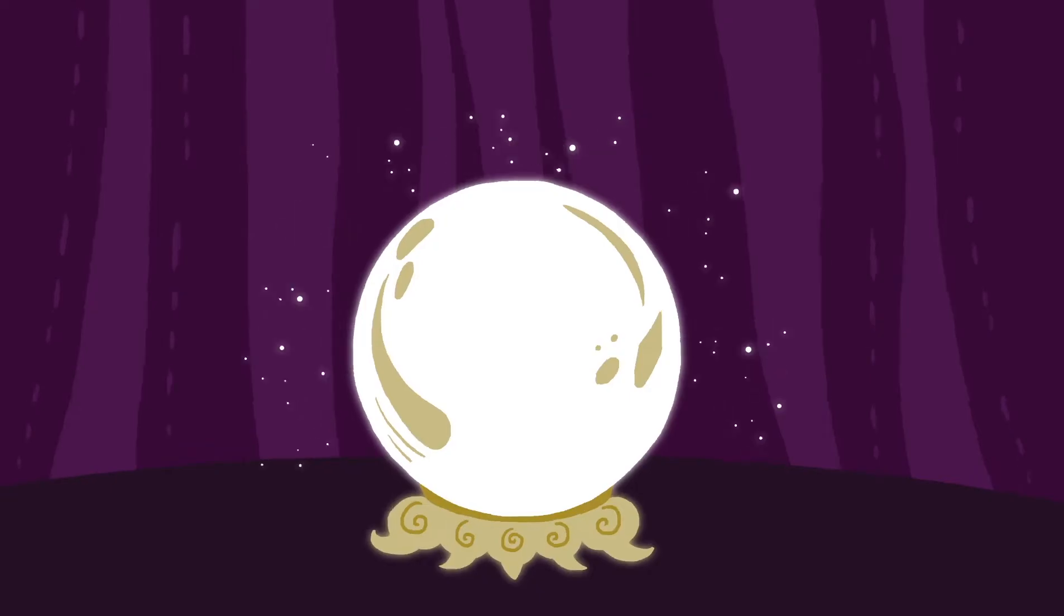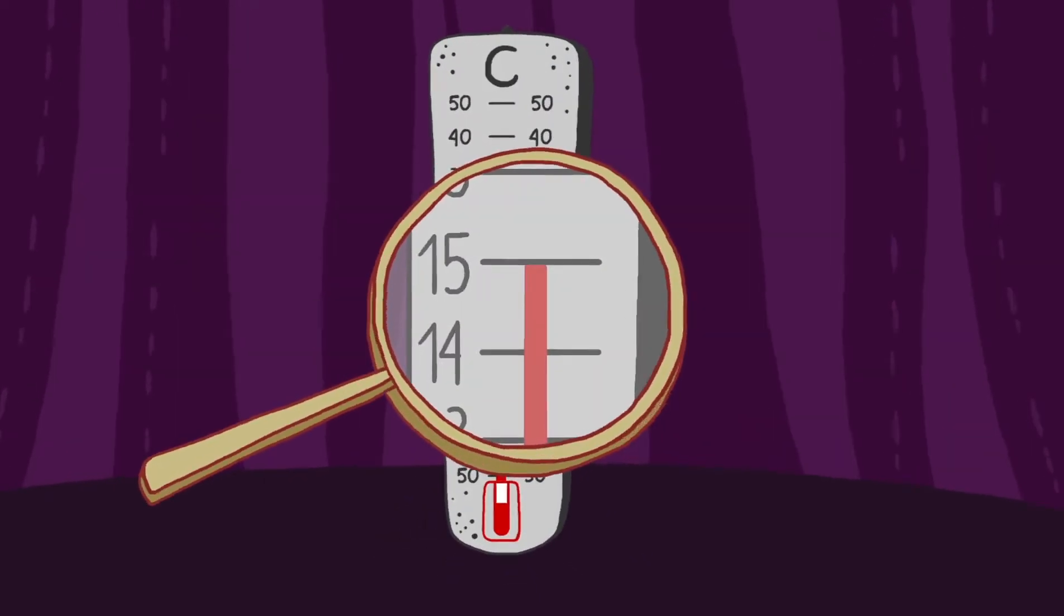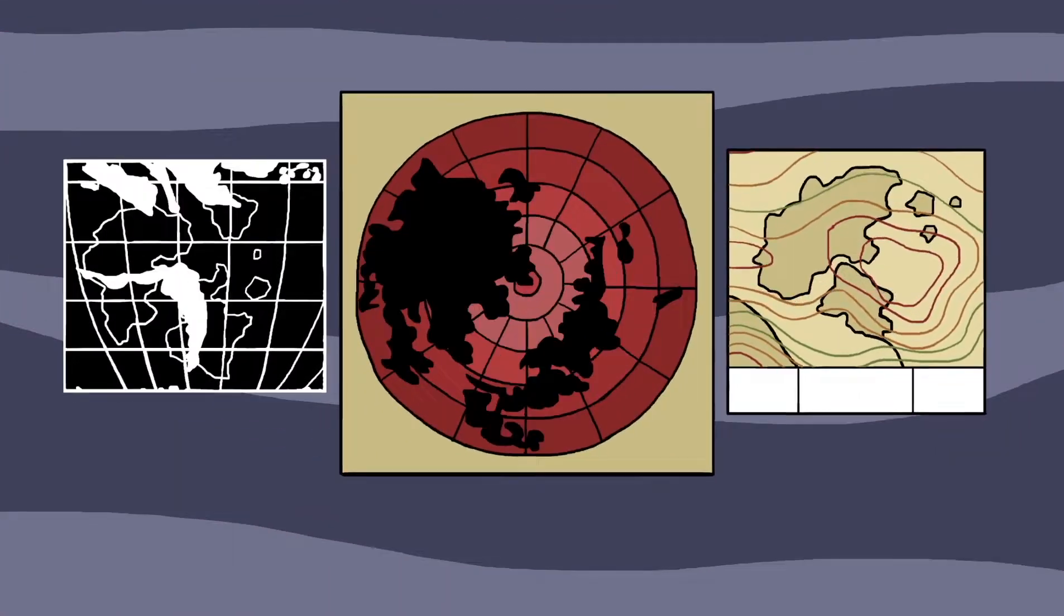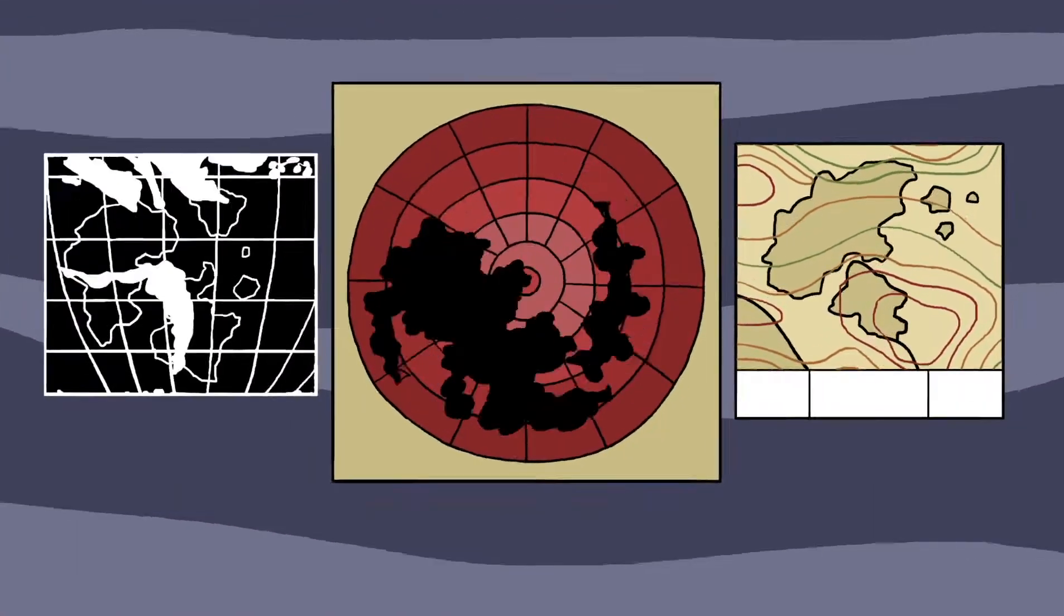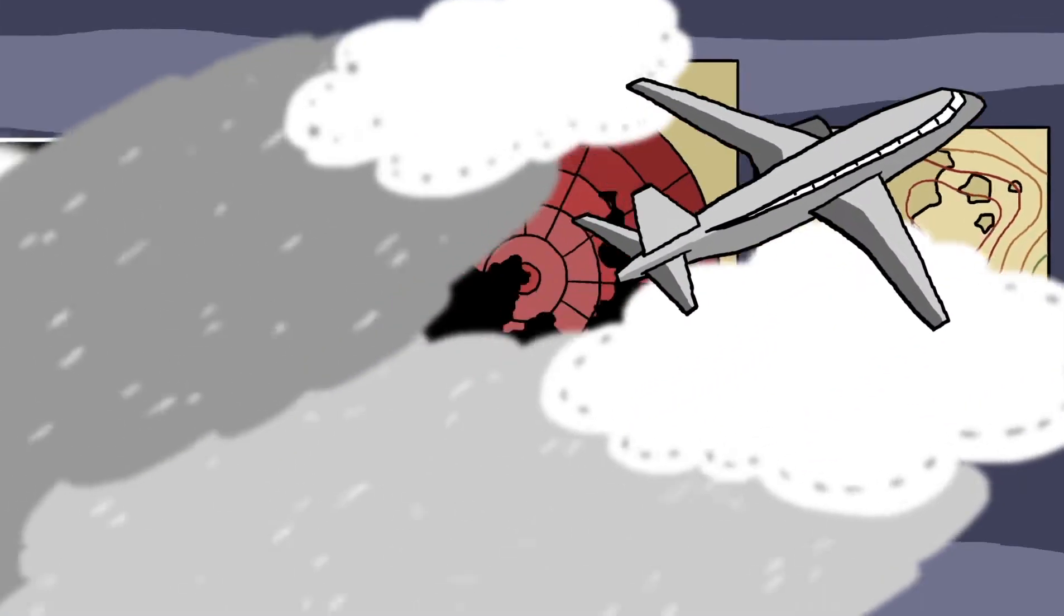However, if we wish to predict the temperature next Saturday to within one degree, then we would need to model a multitude of interacting factors, including air pressure, wind speed and wind direction, as well as all the cloud patterns and precipitation.